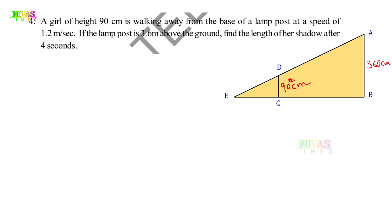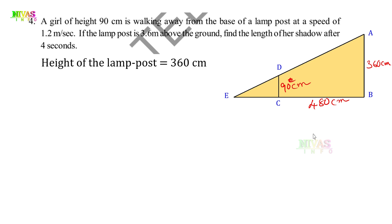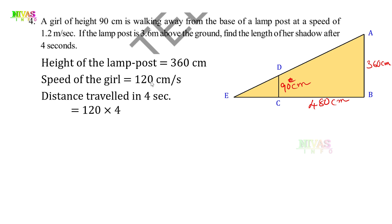After 4 seconds, the girl travels at 1.2 m per second, which is 120 cm per second. Distance traveled in 4 seconds equals 120 × 4 = 480 centimeters. So the girl is at 480 centimeters from the base. Height of the lamp post is 360 cm and height of the girl is 90 cm.